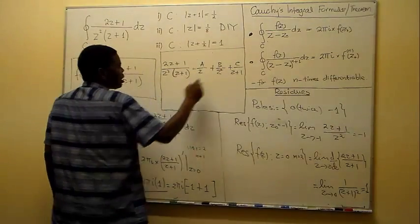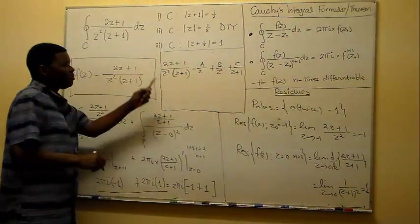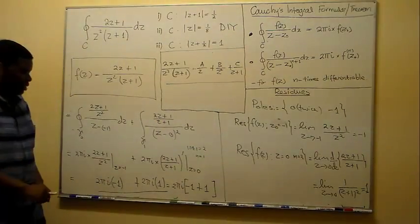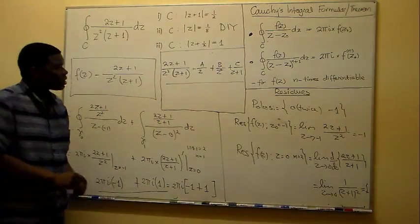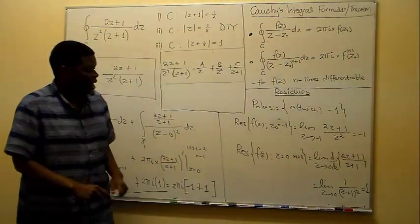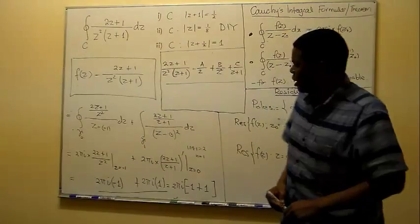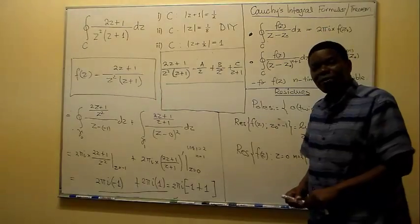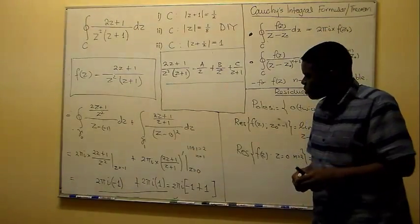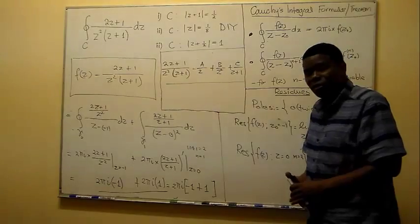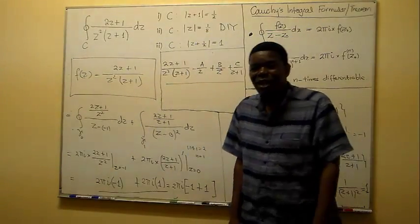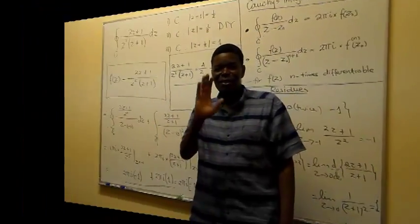So you can work out the constants A, B, C and try to integrate this, and check if you get the same results obtained via the Cauchy formula and the residue theorem. I think you are now in a position to get on and practice similar examples from your texts and your lecture notes. Thank you for listening and goodbye.